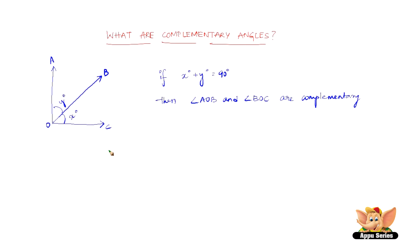So defining it: two angles — in this case B, O, C and A, O, B — the sum of whose measures is 90 degrees are called complementary angles.